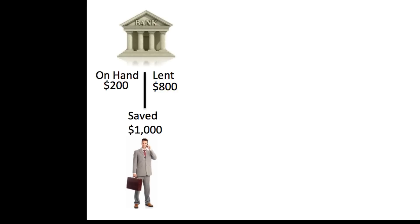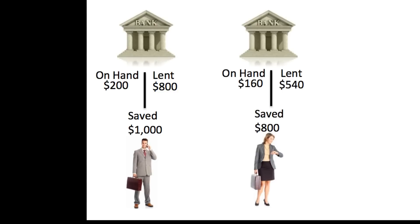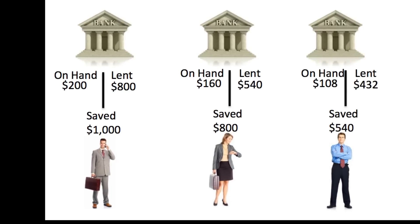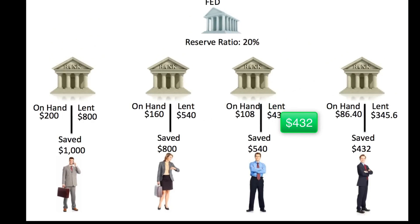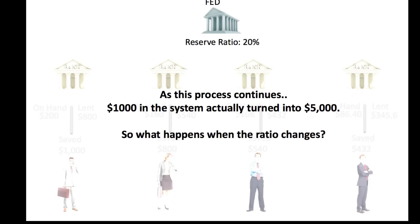Let's see what happens when the bank lends out that $800. The bank lends $800 to a woman, and she deposits it at her bank. That second bank must hold 20% of $800, which is $160, and can lend out $540. Someone then saves that $540 — the bank keeps $108 and can lend $432 — and the process continues on and on. So $1,000 initially saved actually turns into $5,000 in the system.